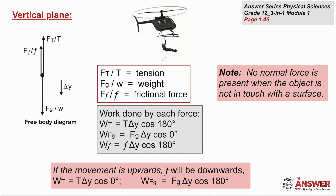In the vertical plane, the object could be moving up or down. Here the delta y vector is shown downwards, and so the gravitational force acting in the same direction means the angle between the two vectors is 0 degrees, and the gravitational force does positive work. The tension in the cable is acting in the opposite direction, so the angle between the tension and delta y is 180 degrees, and the tension does negative work. The frictional force — also upwards, typically air friction — is also at 180 degrees to delta y, so friction will also do negative work.